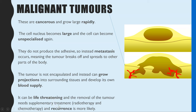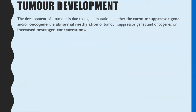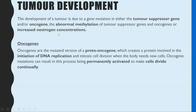Now, how do these tumors develop? There are four key ideas. First, a gene mutation in a gene that controls cell division — specifically in the tumor suppressor gene, in oncogenes, or in both. Third, abnormal methylation of a tumor suppressor gene or oncogene. And fourth, increased estrogen concentrations. We'll start with oncogenes.